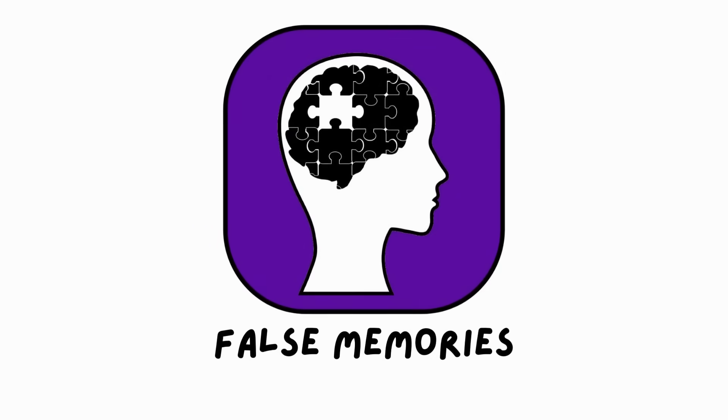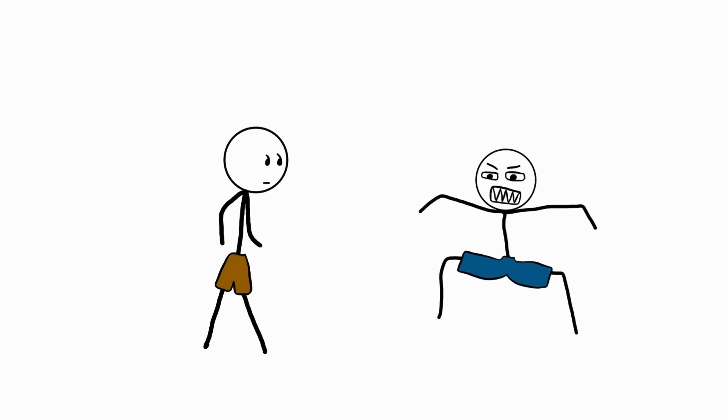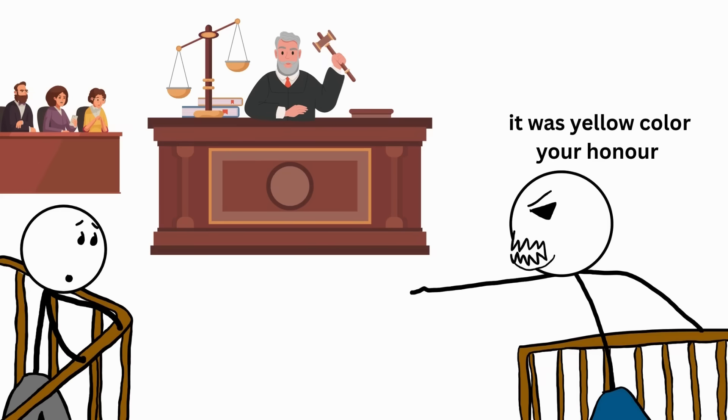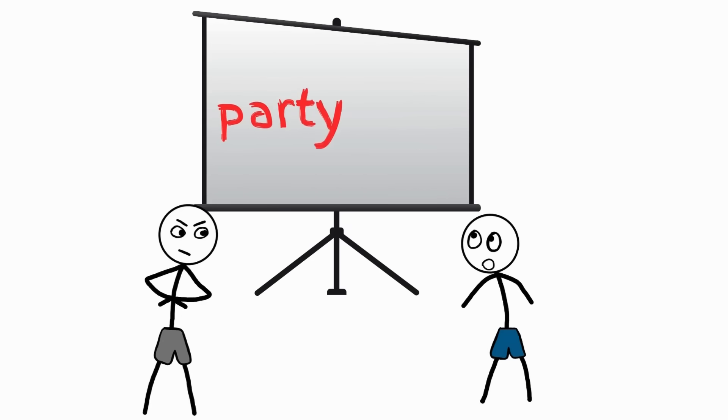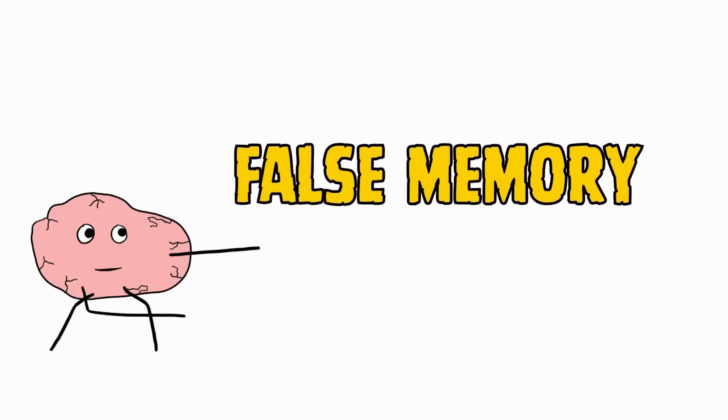False memories. You're 100% sure that your best friend wore a yellow shirt that day. You even swear it in court. But then, the evidence photos are brought up, and he was wearing an orange shirt. You just unlocked a false memory.